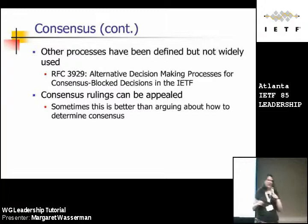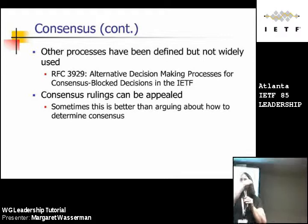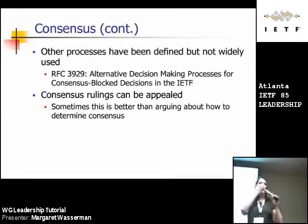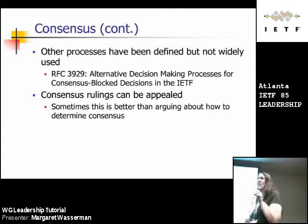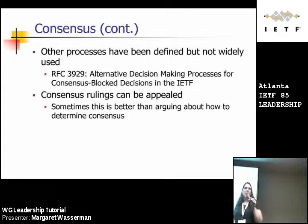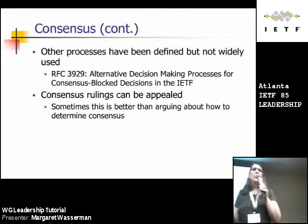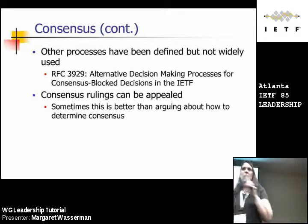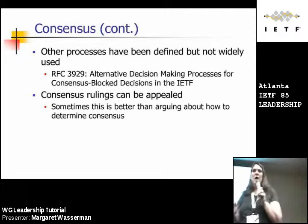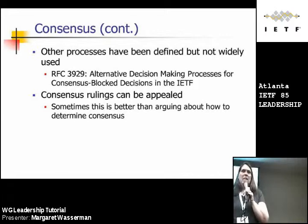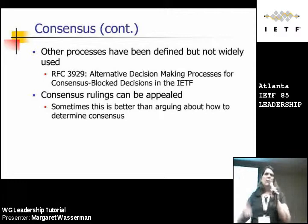Other processes have been defined in the IETF for reaching consensus but they're not widely used. If your group is blocked, try reading the RFC — it includes options like flipping a coin, though I've never heard a working group agree to that on a technical issue. The point of all of them is to get the working group to agree that it's more important to move forward with either proposal than to block on the choices. If you make the wrong call on consensus, your consensus ruling can be appealed.